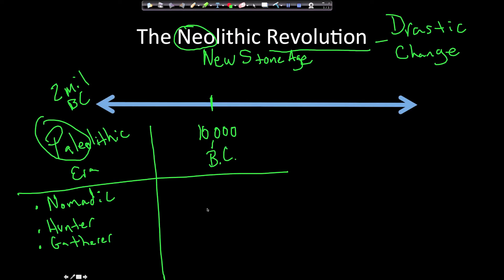Around 10,000 BC, something happened. Nobody's really sure exactly what happened, but we do know that agriculture developed — people started farming. Why they started farming is the unknown part. Did they start because they could no longer hunt enough food to survive? Or did they just figure out how to farm? Was it the end of the Ice Age, so the weather was now good for farming? That question remains unknown.